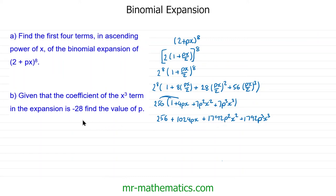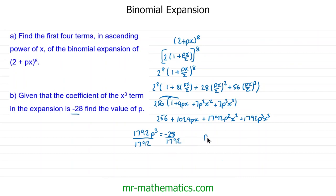That's part a. For part b, we're told that the coefficient of the x³ term is negative 28. So we set 1792p³ equal to negative 28. Dividing both sides by 1792 gives p³ equals negative 1/64. Taking the cube root of both sides, p equals negative one quarter.